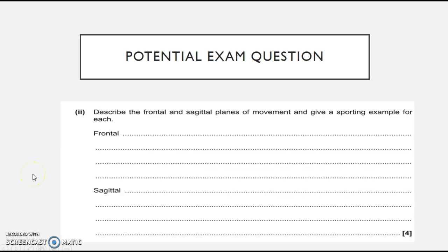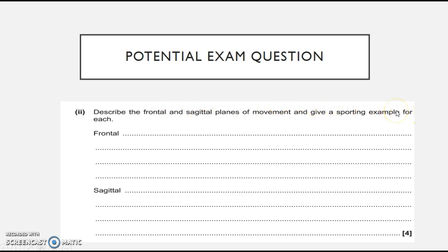A potential exam question — the type of thing you might get — is something like: describe the frontal and sagittal planes of movement and give a sporting example for each. What you've got to be able to do is work out what the planes are, where they're splitting in the body, and then give a sporting example — which requires knowing the types of joint movement that take place there, consolidating what we did in the previous lesson.